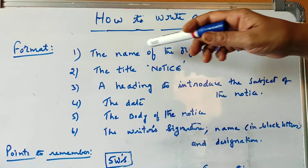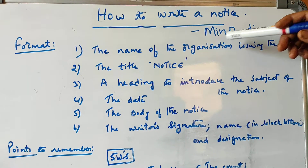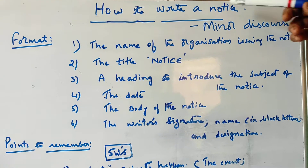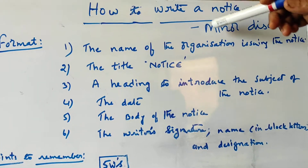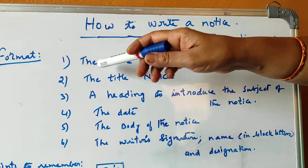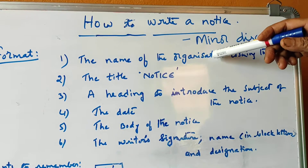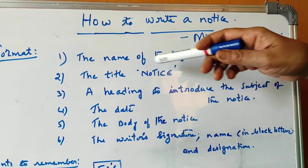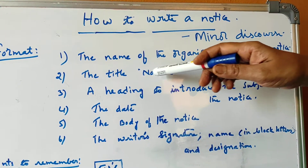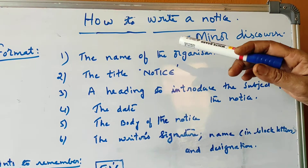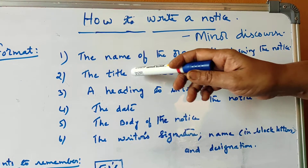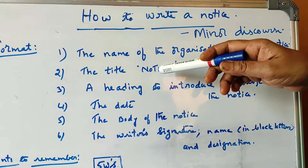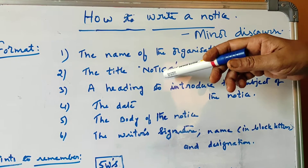The first point in the format is the name of the organization issuing the notice. Whoever is giving the notice, that organization's name we have to write. This is the very first point. The second point is the title — we have to write 'NOTICE'.